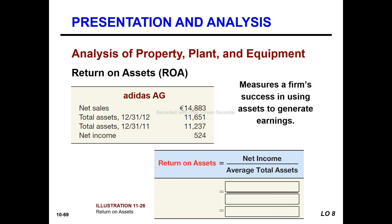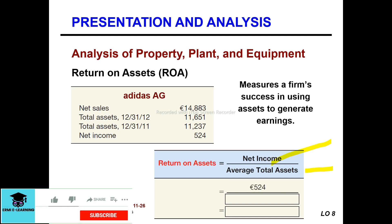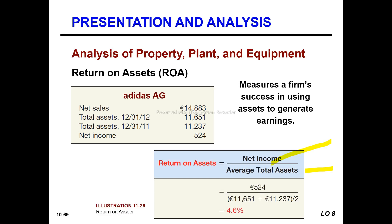Return on asset is the measurement of the firm's success in using assets to generate earnings. The formula is: Net Income divided by Average Total Assets. This measures how effectively the company uses its asset investment to produce net income.